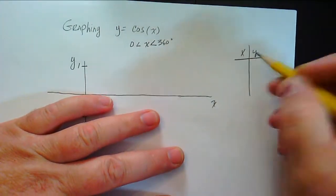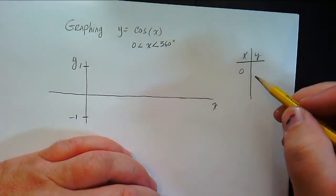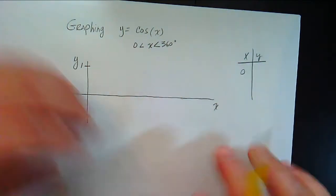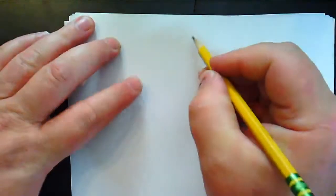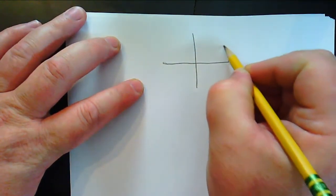Let's do a t-chart. Alright, let's put in 0, the cosine of 0. Well if you remember on the unit circle, so if we have our unit circle like this right here, here's our first quadrant, right?